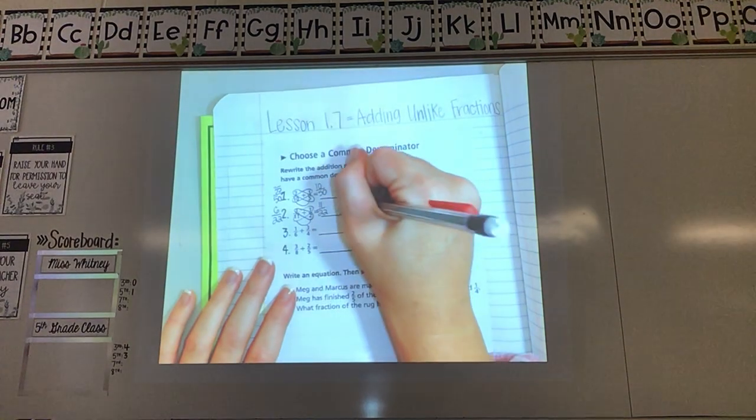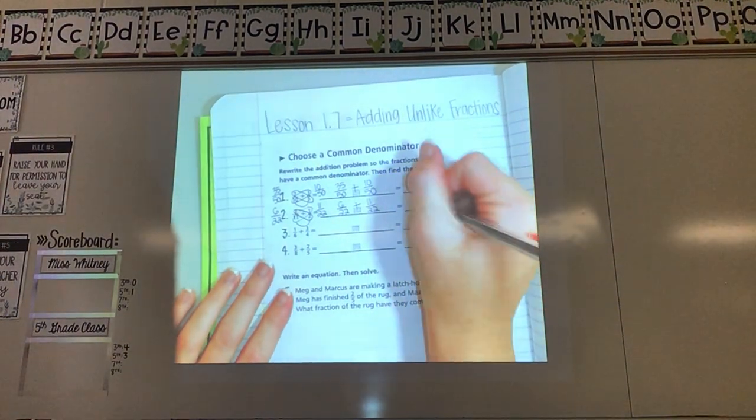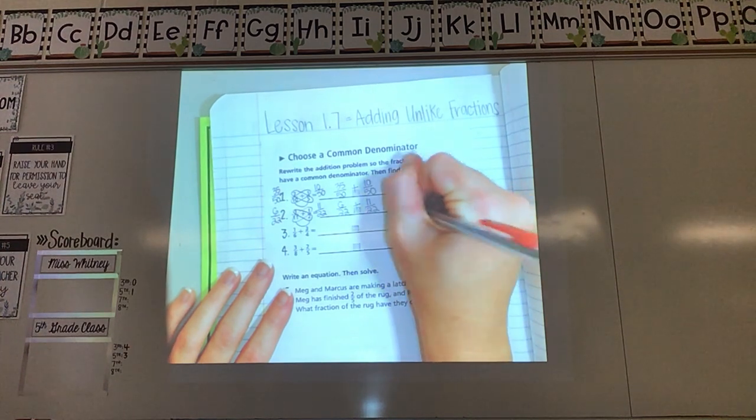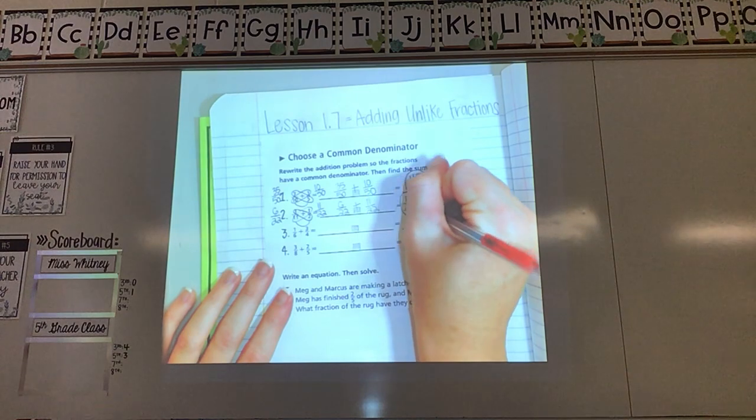And they're asking me to add. So I'm going to put a plus sign in the middle. And I'm adding across the top. 6 plus 11 is 17. My bottom number stays the same, 22. So 17 twenty-seconds.